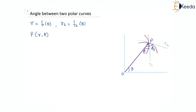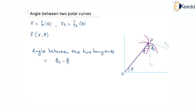If you're looking for the angle of intersection, the angle of intersection will actually be the difference between these two angles, that is phi2 and phi1. So the angle between the two tangents will be equal to phi2 minus phi1, considering phi2 minus phi1 comes out to be an acute angle. Otherwise, we can take the absolute value: |phi2 minus phi1|. So this is going to be the acute angle.